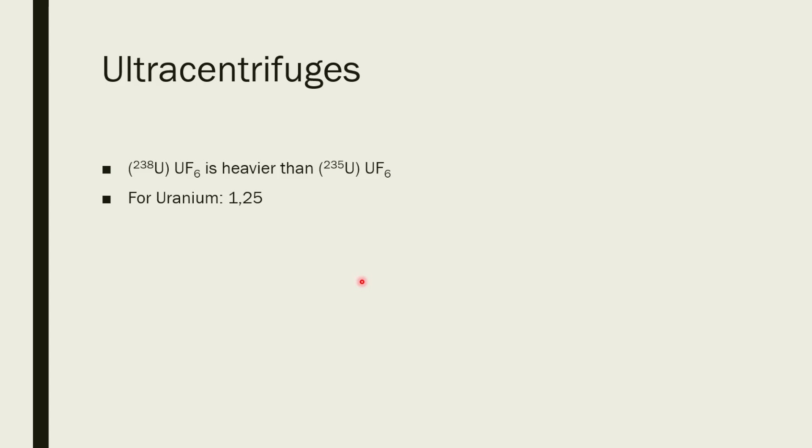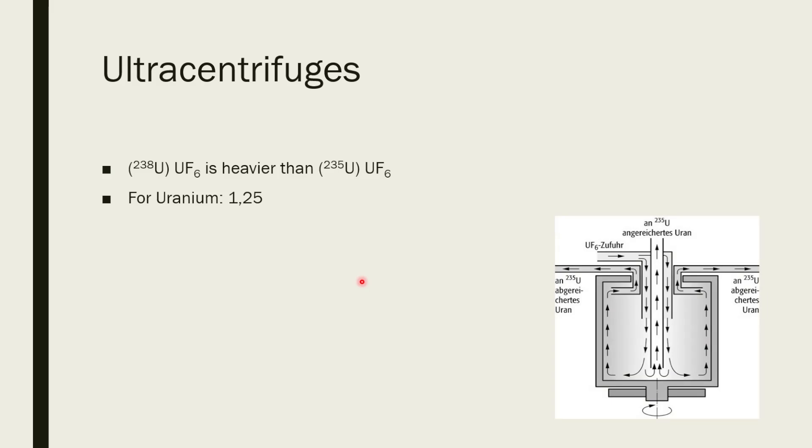And once you have the uranium hexafluoride, you can use ultracentrifuges in order to separate the uranium-238 from the uranium-235. This is a schematic on how they work. So you have your mixed uranium hexafluoride and the light uranium-235 will stay in the middle and the heavier uranium-238 can then be separated out. And this is what you will then later use in another centrifuge and so on. And then you would have to further proceed with the enrichment in order to get to your desired enrichment.